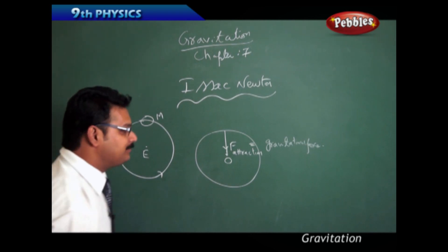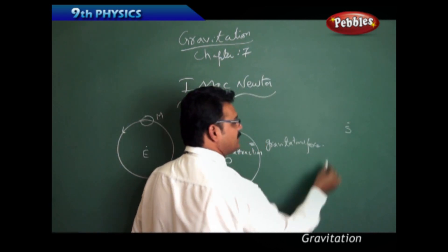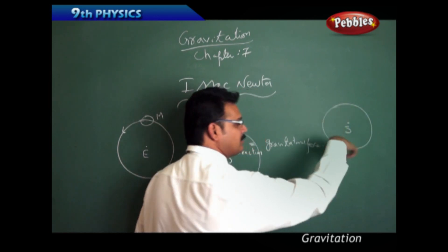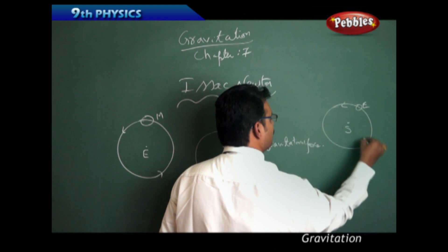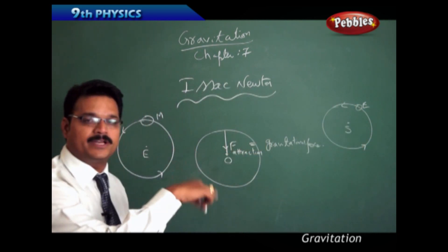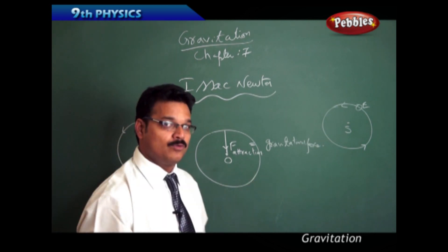Take another example. Take sun as a center and around the sun the planets are revolving, and one planet is our earth. Now the same question comes: why is the earth rotating around the sun? Take another example. Go to the atoms.